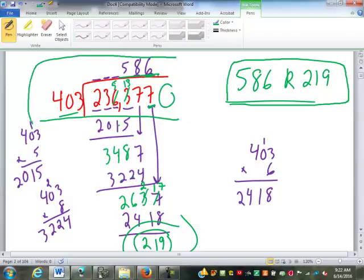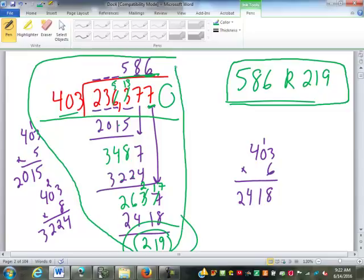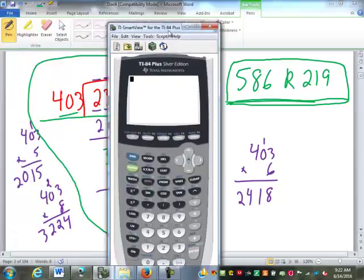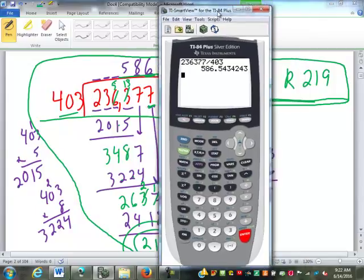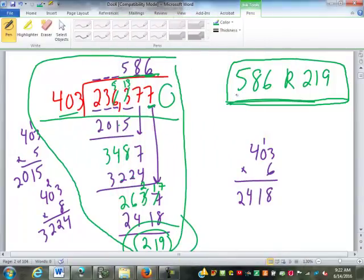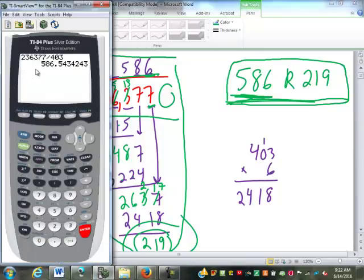We just did this problem out by hand and got our solution with answer and remainder. But what if we were going to punch this in the calculator? Let's do that. That is the first part of our answer here, telling us our answer is 586 with some stuff left over.